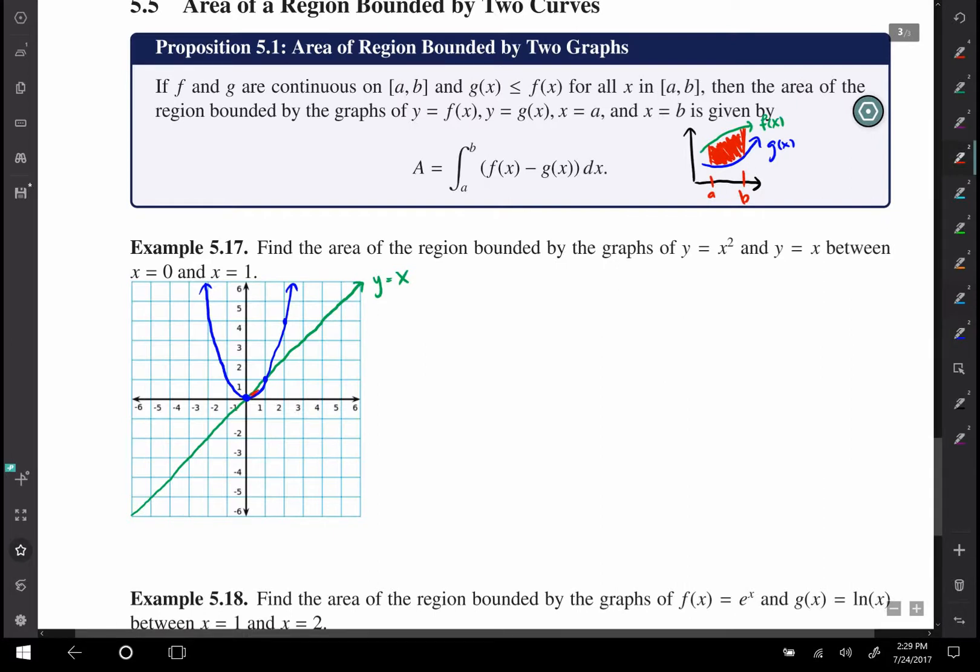But the part we care about is this part right here between 0 and 1. On that interval, the green curve is always above the blue curve, so Proposition 5.1 says that this area must be the integral from 0 to 1 of the green curve, which is x, minus the blue curve, which is x², and that's with respect to x.